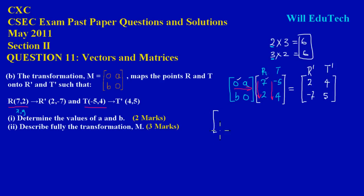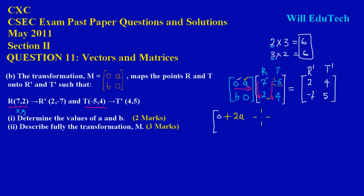Using the top row [0, a] on the first column [7; 2]: 0 times 7 is 0, plus a times 2 gives 2a. Then using the same top row on the second column [-5; 4]: 0 times -5 is 0, plus a times 4 gives 4a.